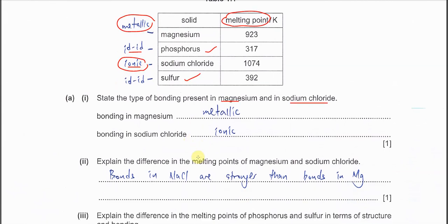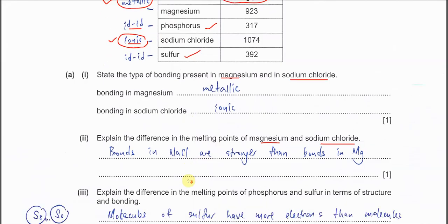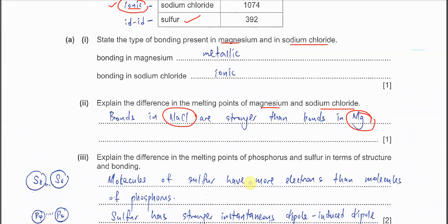Part two asks us to explain the difference in melting point of magnesium and sodium chloride. It is basically about which bonding is stronger. The ionic bonds in sodium chloride are stronger than the metallic bonds in magnesium, and that is the reason they have different melting points — the stronger bonding in sodium chloride gives it a higher melting point.